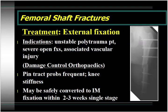The problem with external fixation as definitive treatment for femur fractures is that pin track problems are frequent and knee stiffness is quite common due to binding of the quadriceps mechanism. If you have an external fixator on a femur, the literature supports that it can be safely converted to an intramedullary nail at a single-stage procedure within two to three weeks. Plate fixation is usually reserved for special indications — for example, the patient with an ipsilateral neck-shaft fracture where you want to do a separate procedure to obtain anatomical reduction of the neck. Plates have a higher incidence of infection, nonunion, and implant failure compared to nails.